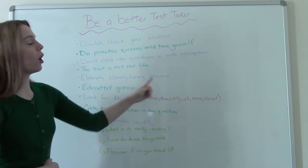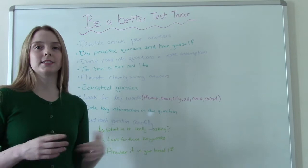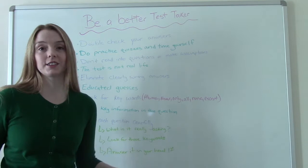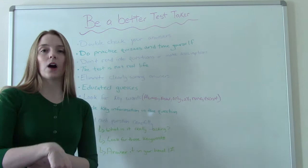Eliminate clearly wrong answers. So hopefully when you're reading through the answer choices you can see, oh well this is clearly not right. You know, that one's obviously wrong. Cross it out. If you can write on your test, if your teacher lets you write on your test, write all over your test. It's going to help you. So if the wrong answer is obvious, cross it out.